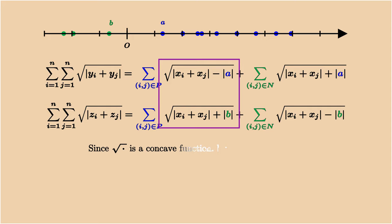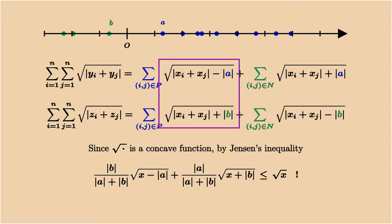Then note that the square root function is concave. By Jensen's inequality, the weighted sum on the square root of x minus a and the square root of x plus b compensate each other.